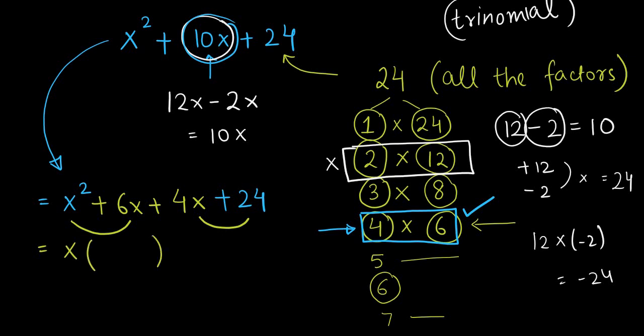What can you take common in these two terms? First two terms: x. What would be left in the bracket? x from here, 6 from here. What can you take out common from these two? A 4. So an x would be left, a 6 would be left.